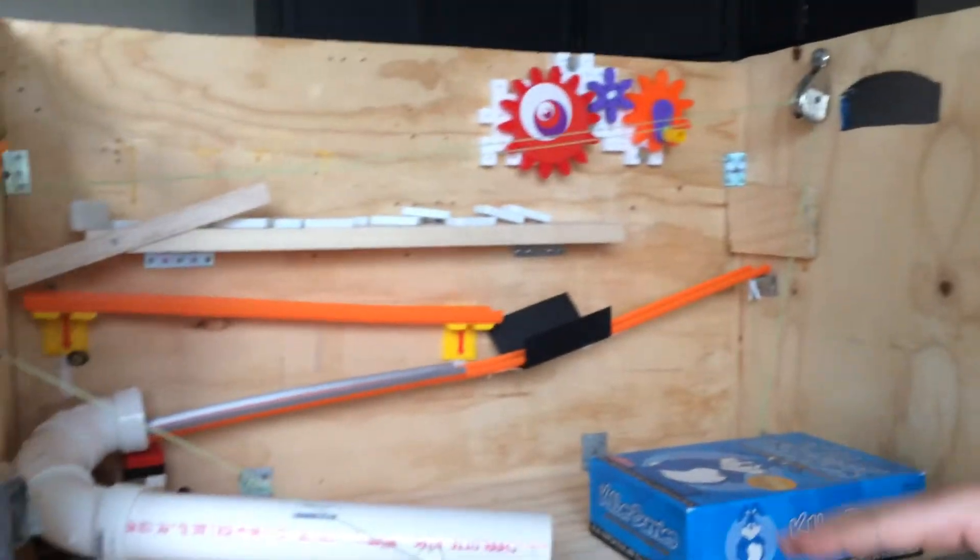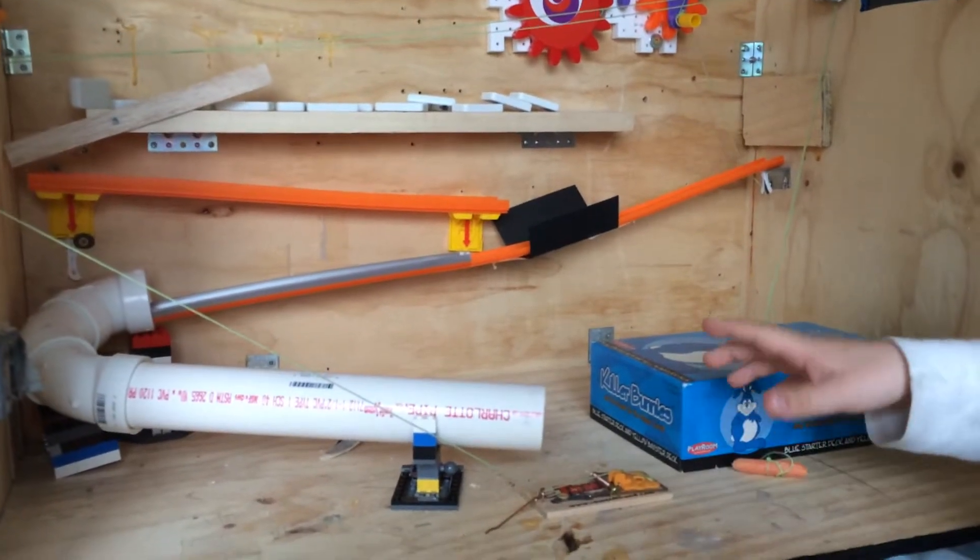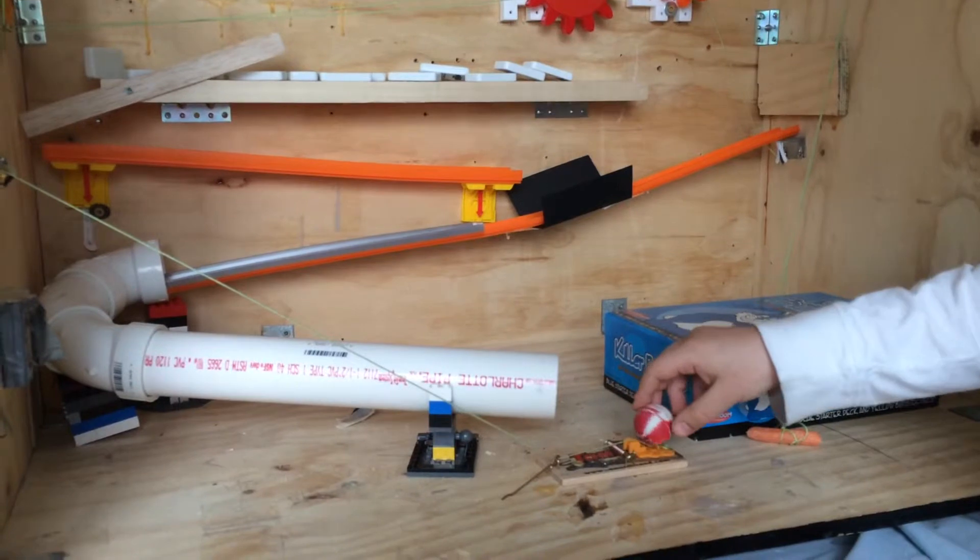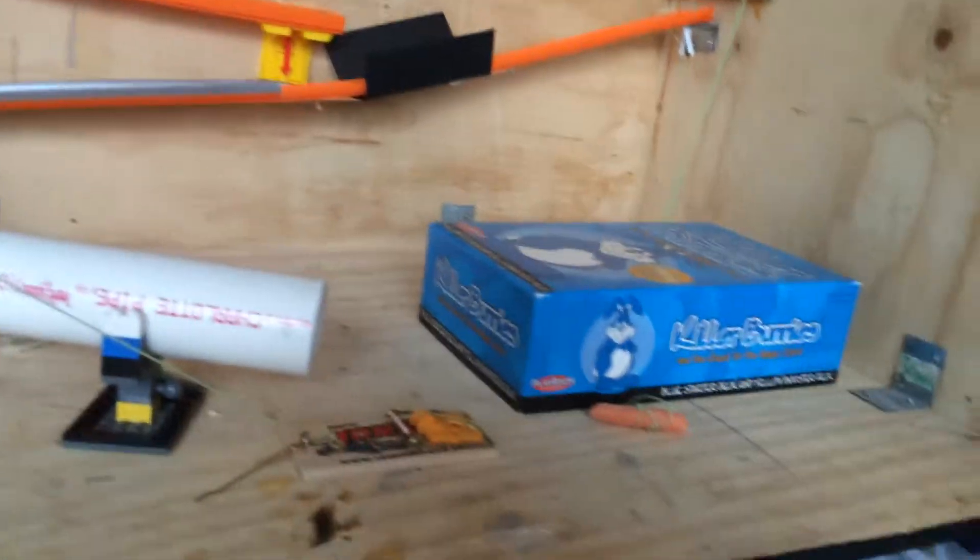Alright, so you might not have noticed that last part. But what happened is, the ball fell out and hit that, which made this trigger, and then that pulled the stick out, which made the box fall on the bunny.